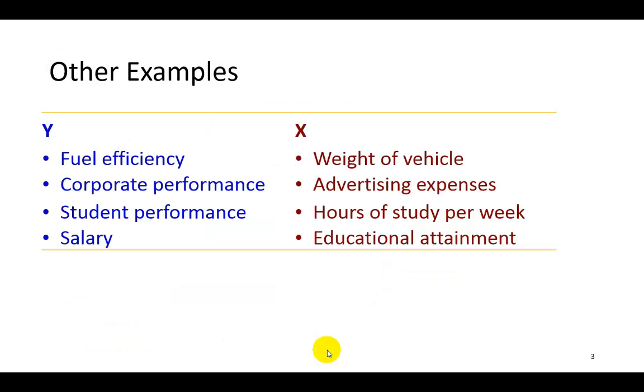A few other examples of simple linear regression inquiries are summarized here. Fuel efficiency can be explained by the size or weight of the vehicle. Corporate performance might be a subject you want to learn about, which can be explained by advertising expenses. Perhaps you feel that the more money you spend advertising your product, your bottom line would go up. Student performance is another, which perhaps might be explained by hours spent studying. Employee salary regressed against educational attainment. In all cases, you begin by coming up with the dependent variable Y. Afterward, you can then think of an independent variable, or variables for that matter, you believe might explain the behavior of your dependent variable Y.